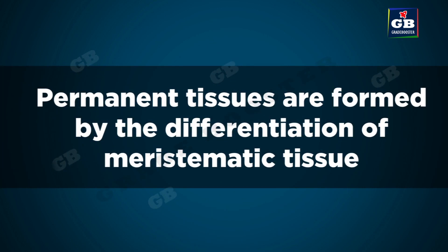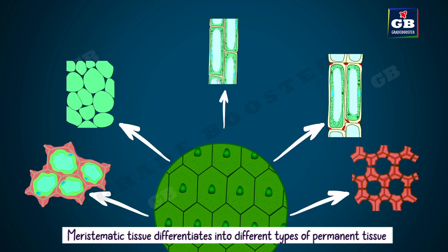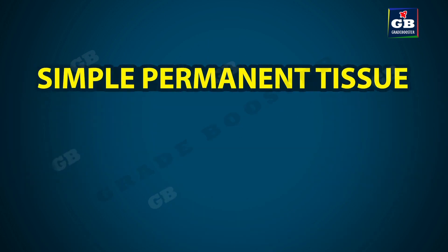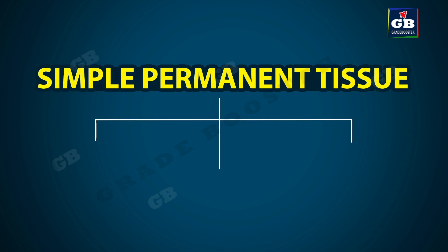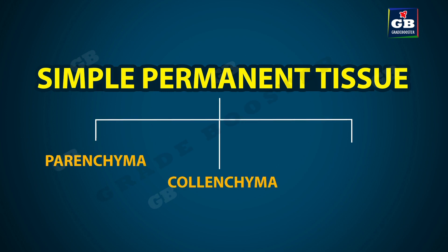Now let us learn about permanent tissues in plants. Permanent tissues are formed by the differentiation of meristematic tissue. The young, immature, unspecialized cells like meristematic cells get differentiated into permanent tissue with specific functions. Simple permanent tissue is of three types: parenchyma, collenchyma, and sclerenchyma.